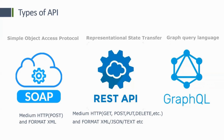But REST API ka ek sabse bada drawback pata kya hai — every small thing, I have to create different different APIs. Toh hum kitni APIs create karenge? Ek application ke andar agar mein 40-50 APIs create karunga, toh unnecessarily mera application bloated ho jaayega. Toh ye ek sabse bada drawback tha REST ka, ki REST ki wajah se hume har chhoti chhoti cheez ke liye API banani padti hai, jiski wajah se aapka system kaafi bloated ho jaata hai.